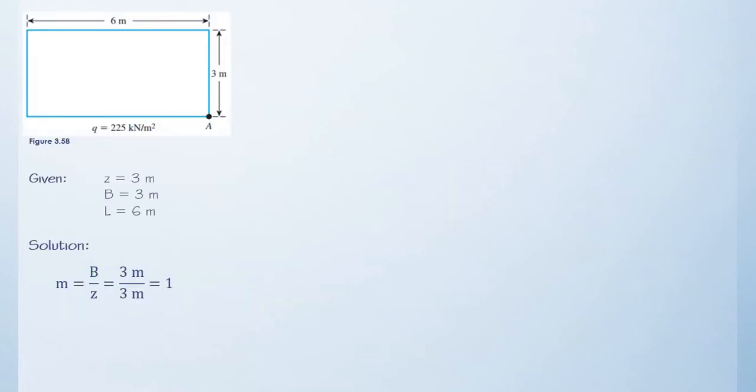Let us solve. First and foremost, we have to determine the value of M and N. We said that M is equal to B divided by Z. Our B is 3 meters and the depth is 3 meters. So, 3 meters divided by 3 meters is 1.